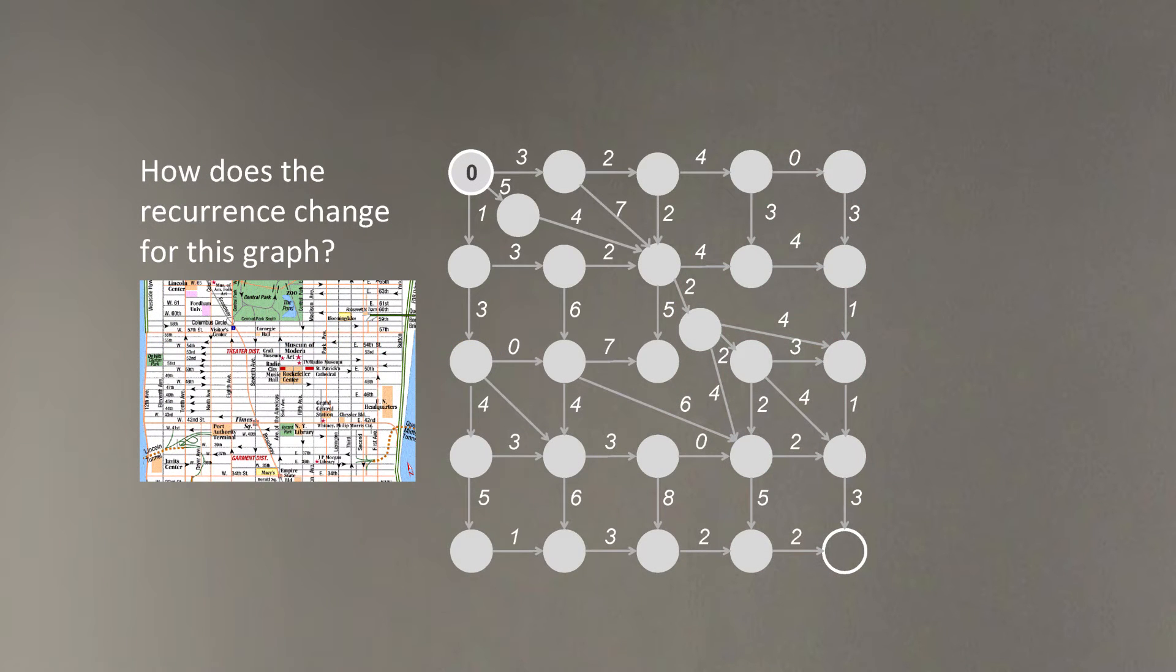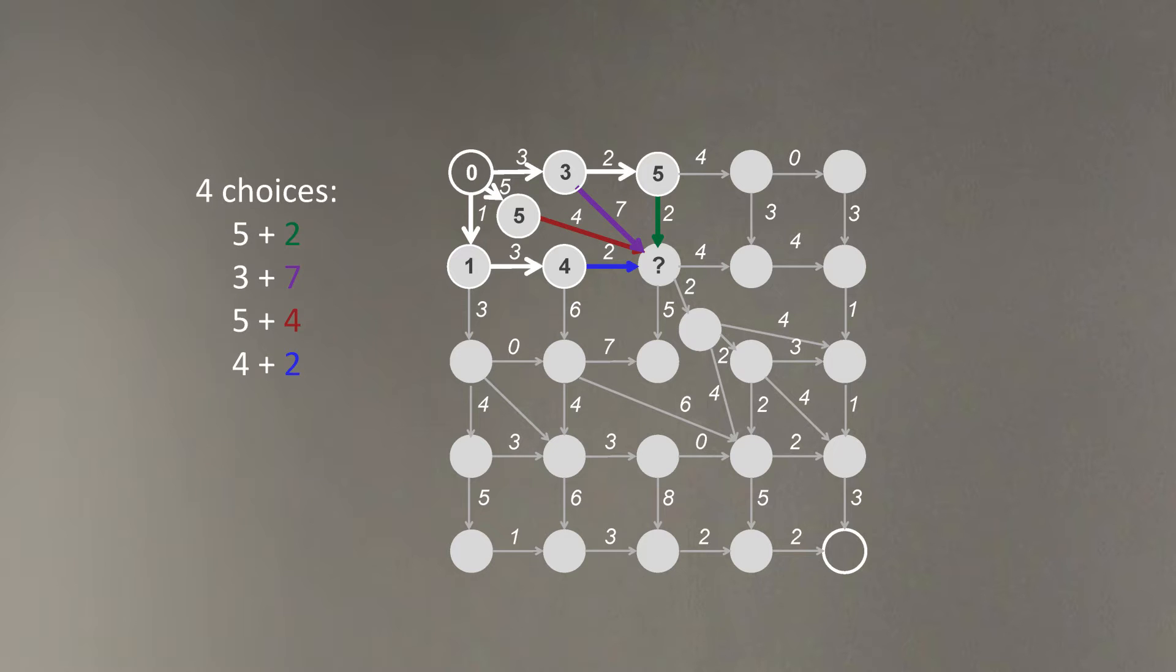Here's an example of a graph. In this case, there is only one way to move to these three nodes from the source, and also only one way to move to this node from the source. But when we move to this node, shown by the question mark, there are actually four different ways to move to this node. Which one should we choose?